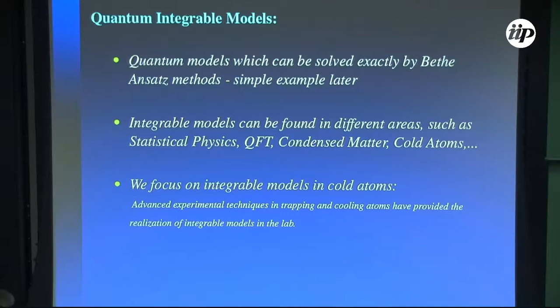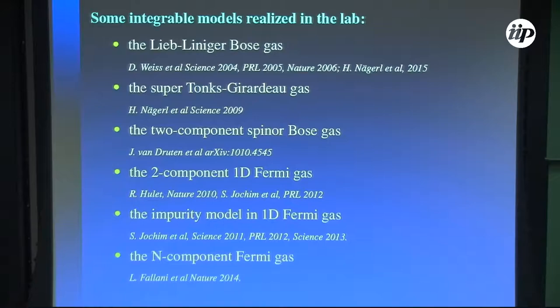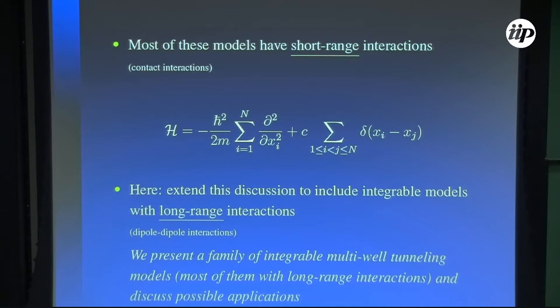Advanced experimental techniques in trapping and cooling atoms have provided realizations of some integrable models in the lab. Some integrable models realized in the lab include the Lieb-Liniger Bose gas, realized by the group of David Weiss; the Tonks-Girardeau gas; the spinor Bose gas; the one-dimensional Fermi gas with two components; and impurities and components studied by the group of Leonardo Fallani. Most of these models have short-range contact interactions. Here, we want to extend this discussion to include integrable models also with long-range interactions, such as dipole-dipole interactions.